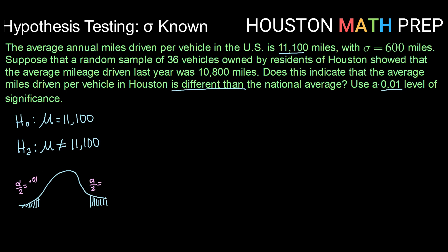So 0.01 divided in half is 0.005 and so we would have an area of 0.005 in the top and an area of 0.005 in the bottom.